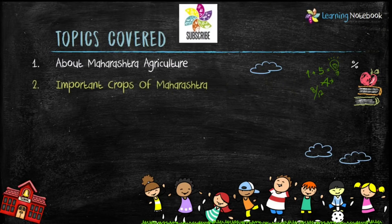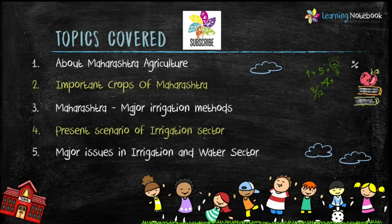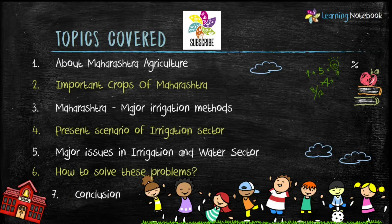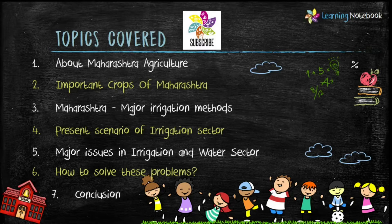Let's see what all topics we are going to cover in this video. First we will learn about Maharashtra agriculture, then important crops of Maharashtra. After that we will understand major irrigation methods used in agriculture of Maharashtra, then the present scenario of the irrigation sector, followed by major issues in irrigation and water sector, and finally how to solve these problems.